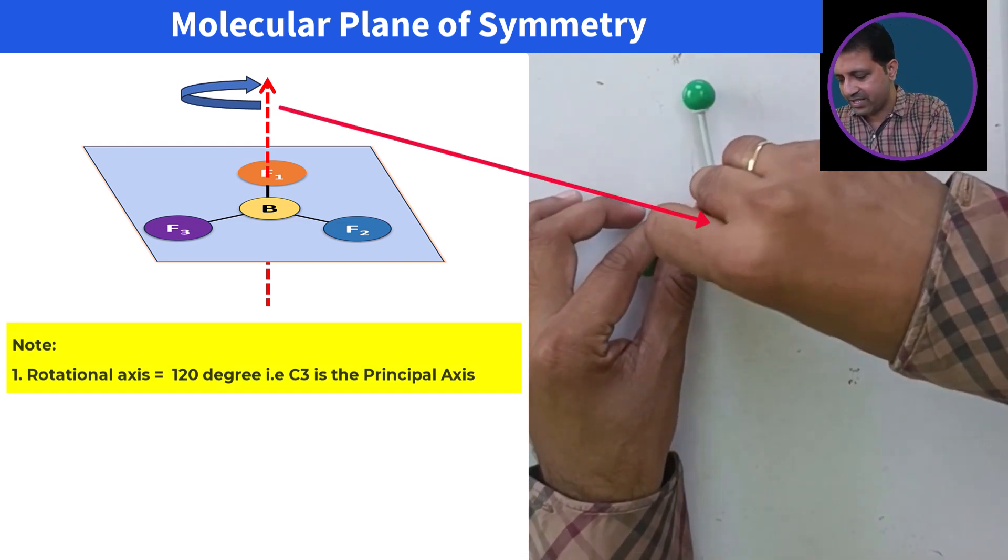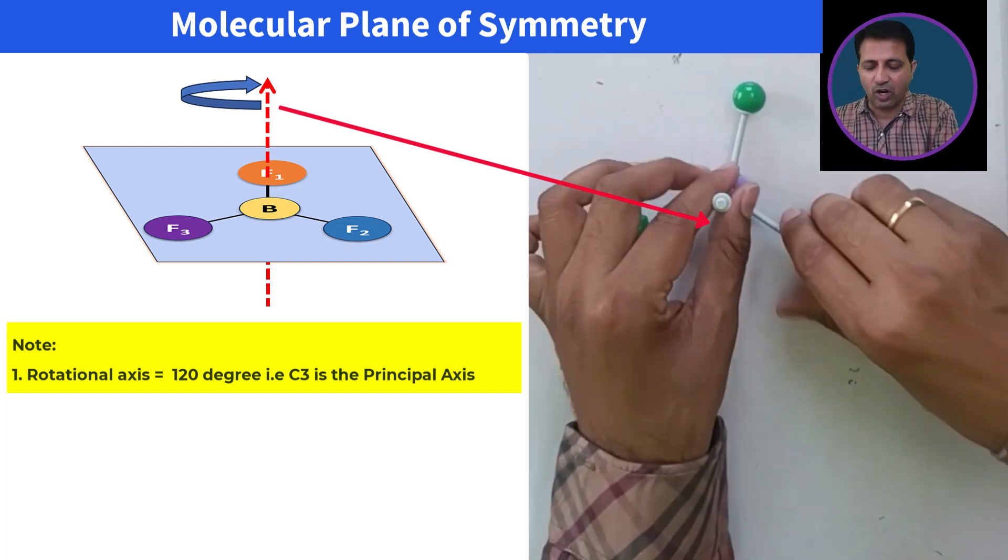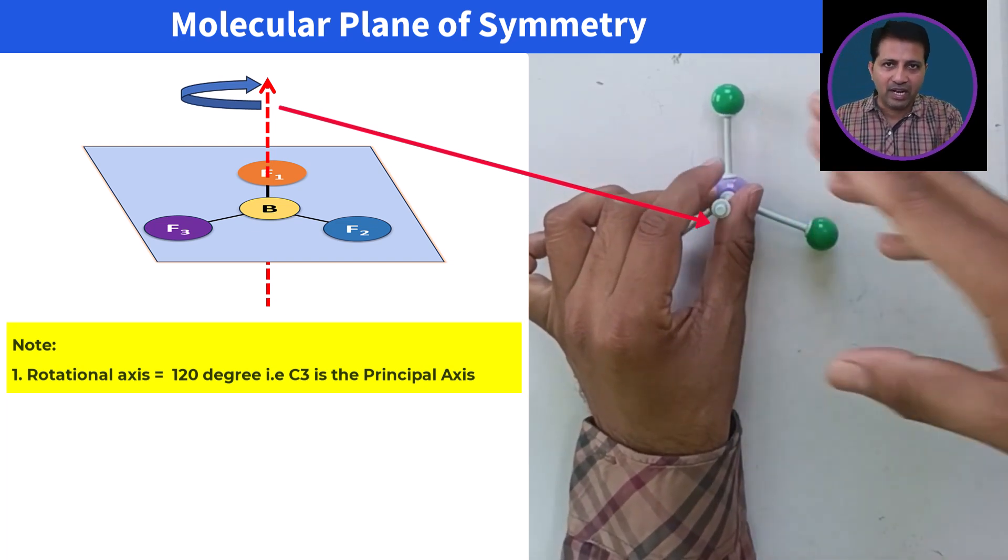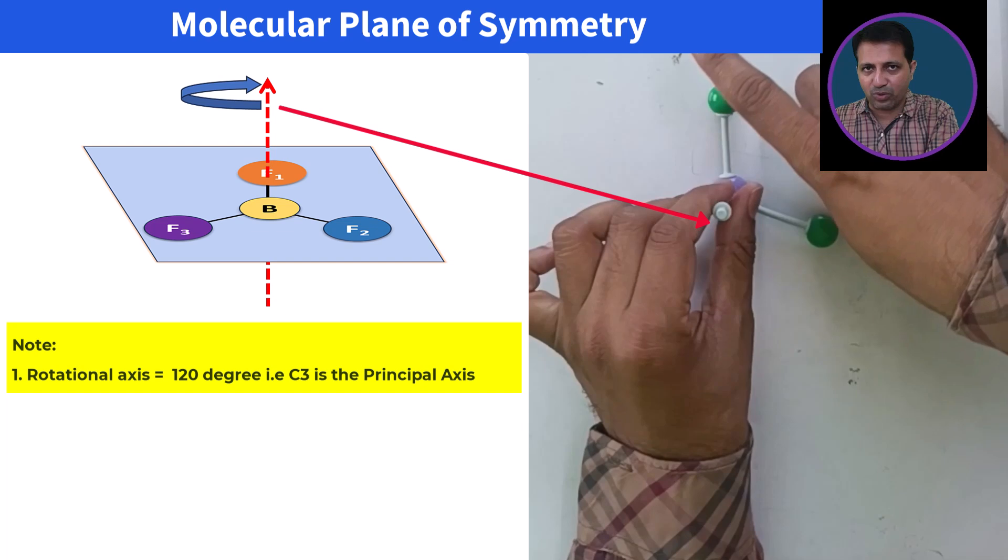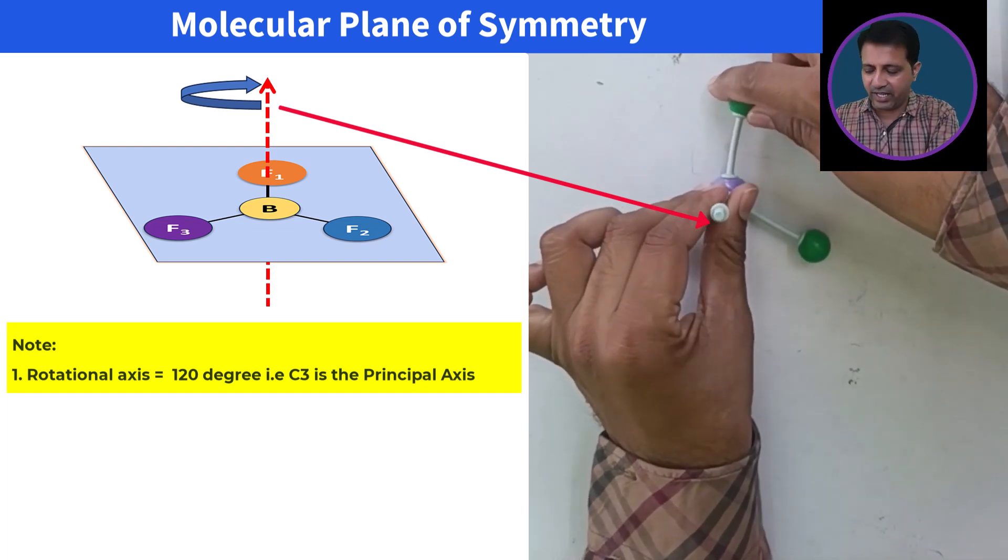If I place a principal axis in this case, in order to get an equivalent or identical configuration, I have to rotate this molecule through 120 degrees.